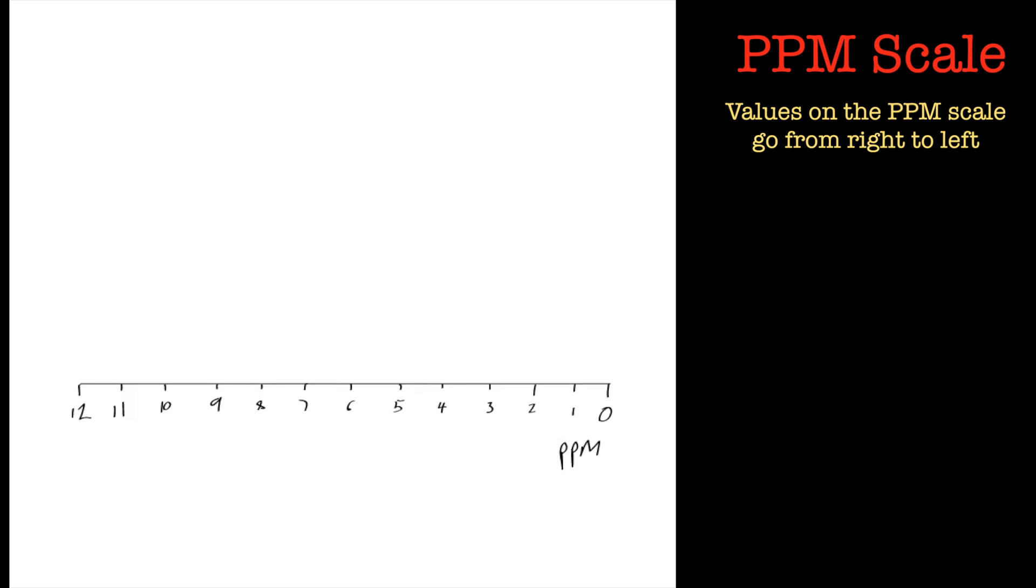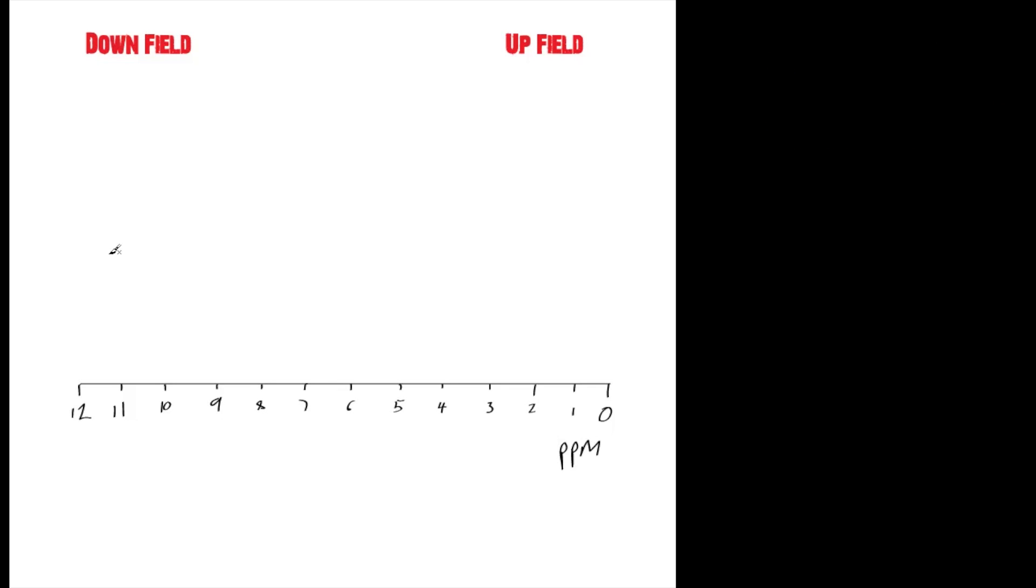Let's start off with the terms upfield and downfield. These are the ones actually I have the most difficulty trying to remember because I know I need to reverse it in my head, but I still get confused. So downfield is towards the higher end of the PPM scale and upfield is towards the lower end of the PPM scale.